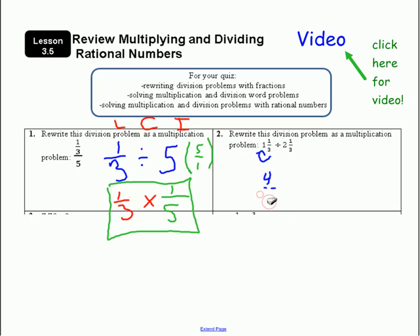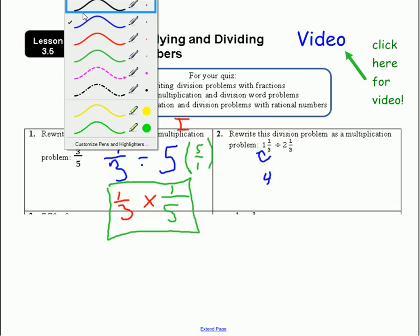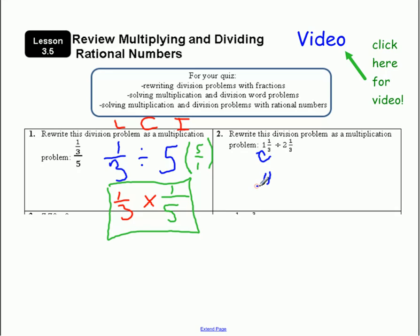Alright. While I'm erasing, you try the next one. How do I change two and one-third into an improper fraction? If you want, pause the video. Let's give everybody a second just to try that one out. I'm going to leave it as a division problem right now, but I want you to rewrite this as an improper fraction. Here's my first step. Okay. Three times two is six. One more makes seven. So this will be seven over the original denominator of three.